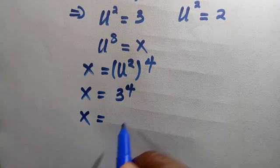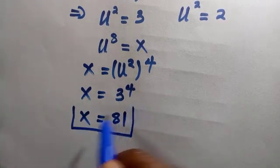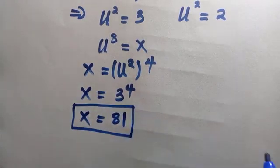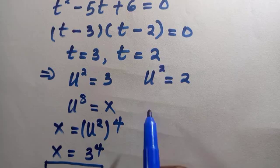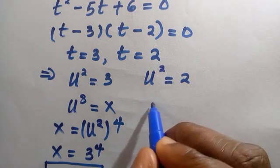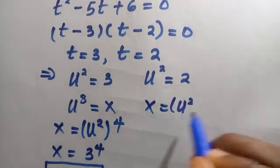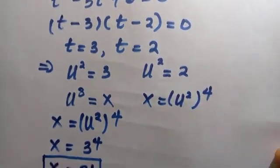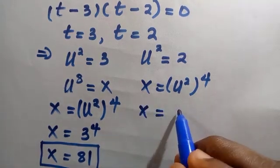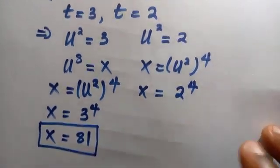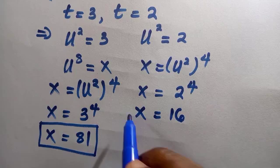With u² equals three, x equals three to the power of four, which gives x equals 81. For the second case, u² equals two, so x equals two to the power of four, giving x equals 16.